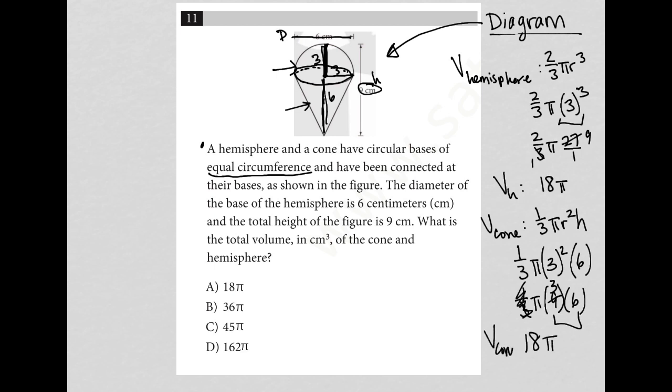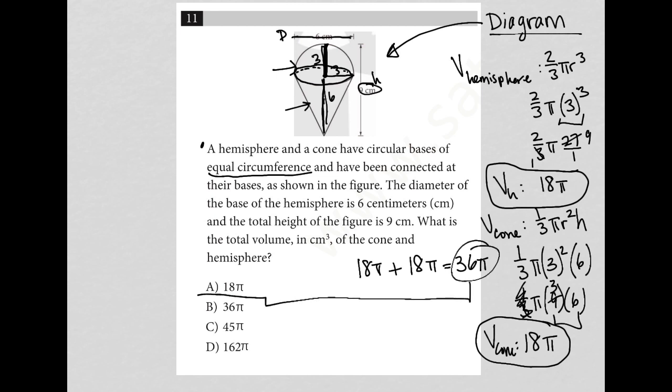So V cone is 18 pi. So all together, the volume of the hemisphere plus the volume of the cone would be 18 pi plus 18 pi, which is equal to 36 pi, which is answer choice B.